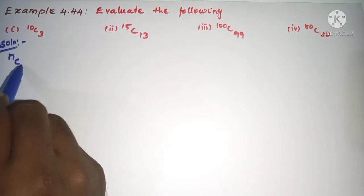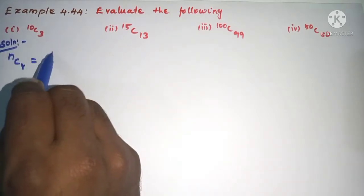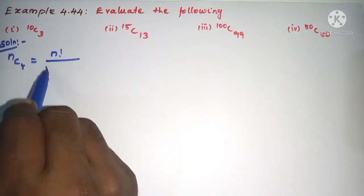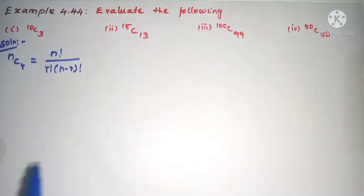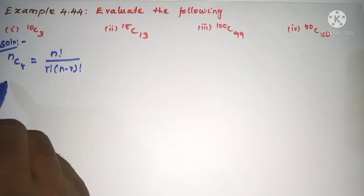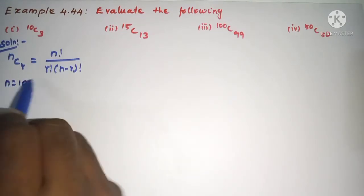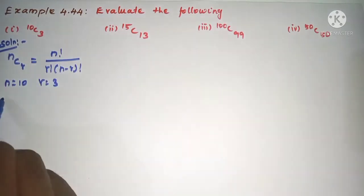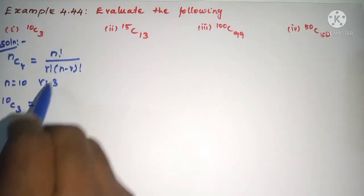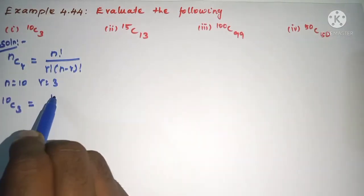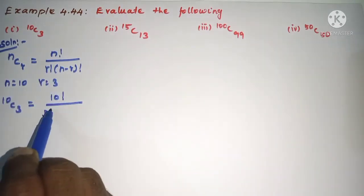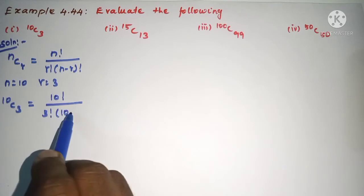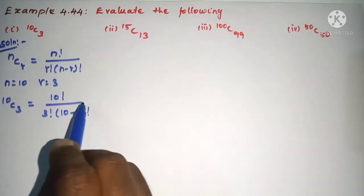See solution. nCr is equal to n factorial divided by r factorial into n minus r factorial. So from sub-question 1, n is equal to 10, r is equal to 3. Therefore, 10C3 is equal to 10 factorial divided by 3 factorial into 10 minus 3 factorial.